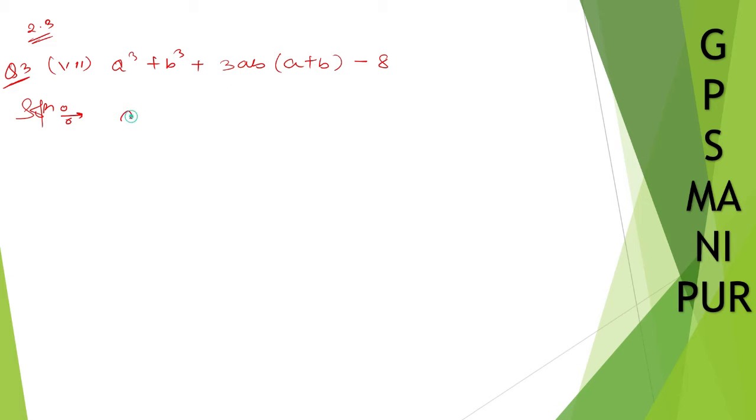So, it will be a+b, a³ + b³ formula, that is one formula. So, that is (a+b)³ = a³ + b³ + 3ab(a+b).